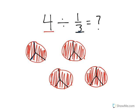So I count 4, 5, 6, 7, 8, 9, 10, 11, 12. When I have four wholes and I divide that by one-third, I get a total of 12 for my answer.